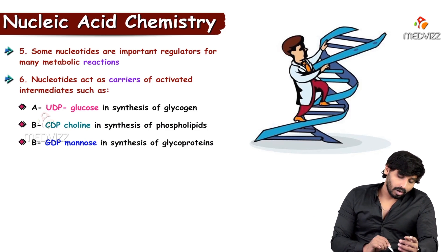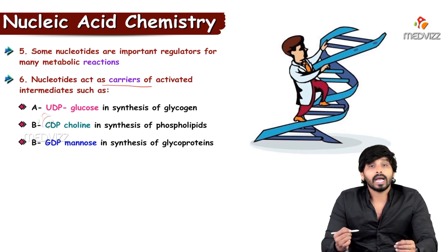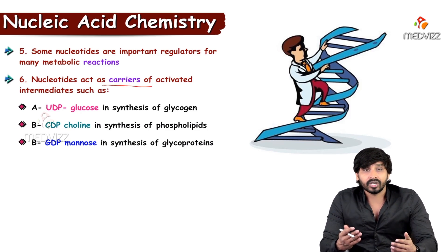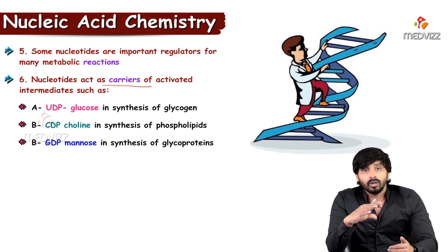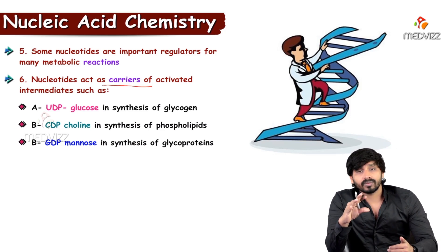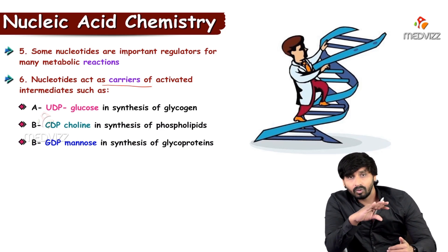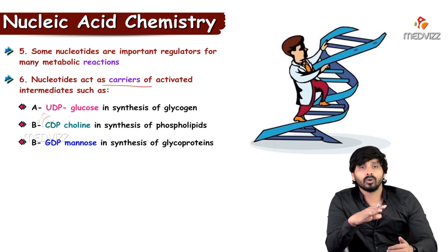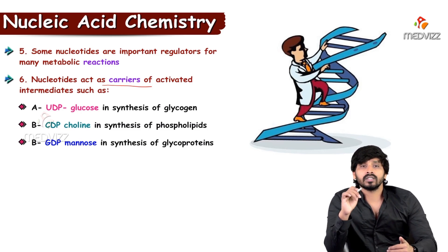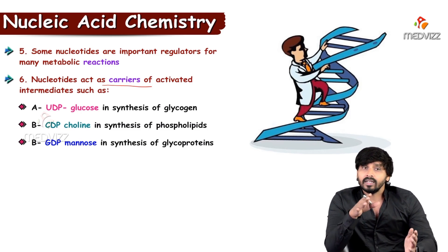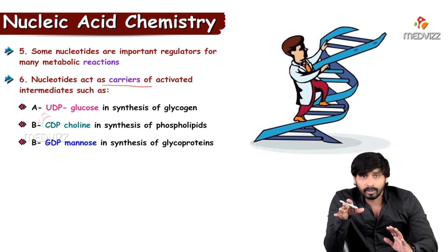Nucleotides also act as carriers for activated intermediates. UTP is required for glycogen synthesis — UTP reacts with glucose-1-phosphate and, by releasing the phosphate group, accepts glucose in glycogen synthesis. Without UTP, glycogen synthesis cannot proceed.